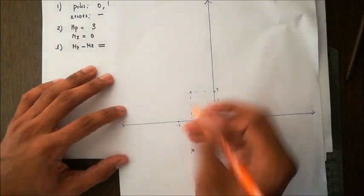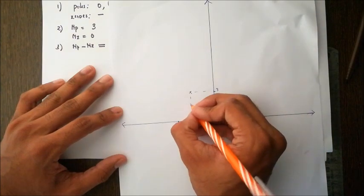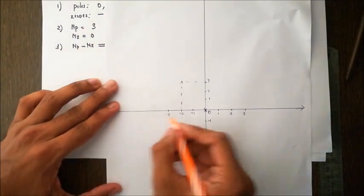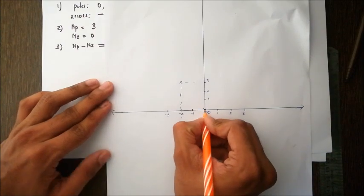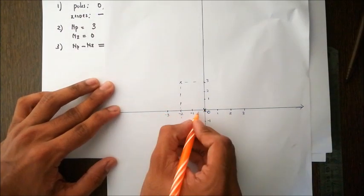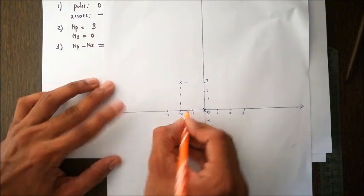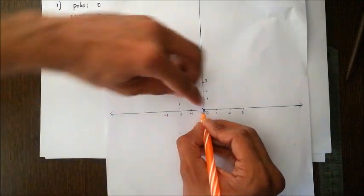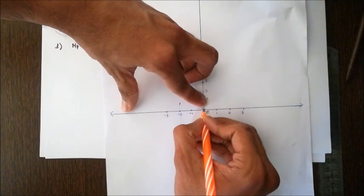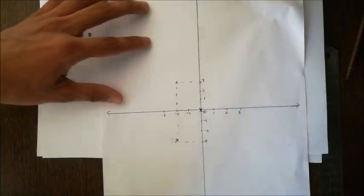Now we find what part of the real axis is part of our root locus. There is only one pole on the real axis, at 0. If you consider any point to the left of 0, it will have an odd number of poles to its right. So the entire negative x-axis is part of the root locus. Let me darken that up.